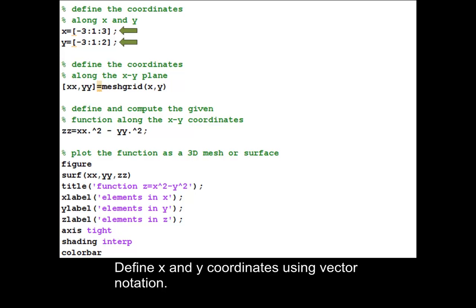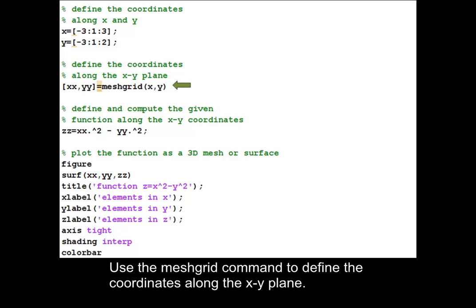Define x and y coordinates using vector notation. Use the meshgrid command to define the coordinates along the x-y plane.